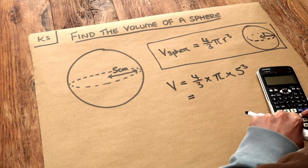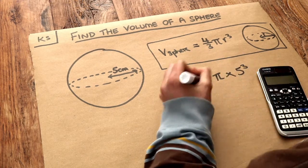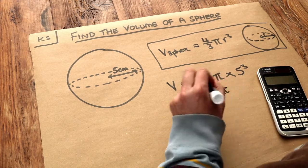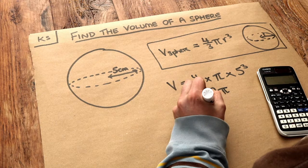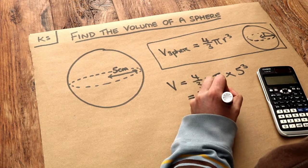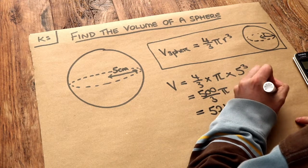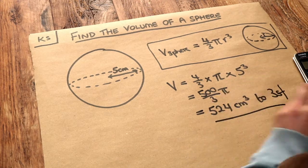500 over 3 pi. And if we press the SD key, then we get 524 centimeters cubed to three significant figures, and that's the final answer.